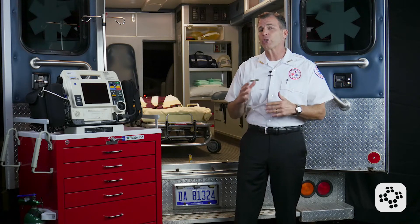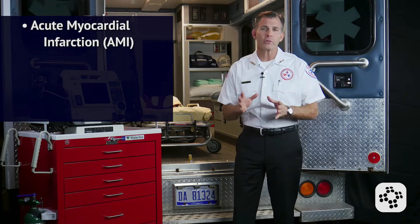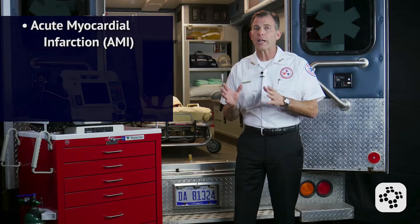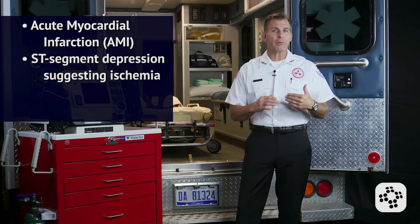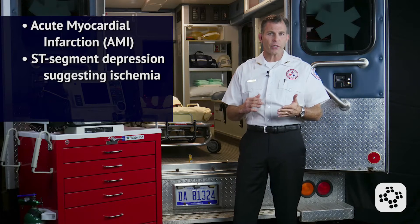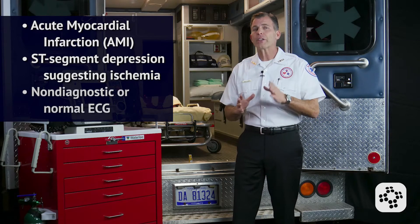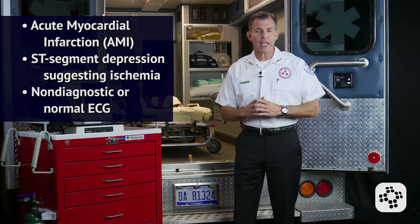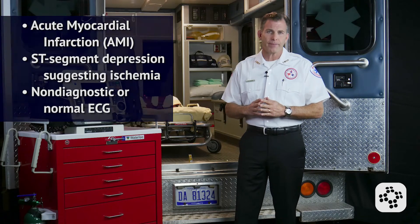An initial 12-lead ECG is used as part of the identification process for all ACS cases. The three ECG categories for ACS include ST-segment elevation, which suggests an acute myocardial infarction or AMI; ST-segment depression, suggesting ischemia; and non-diagnostic or a normal ECG.